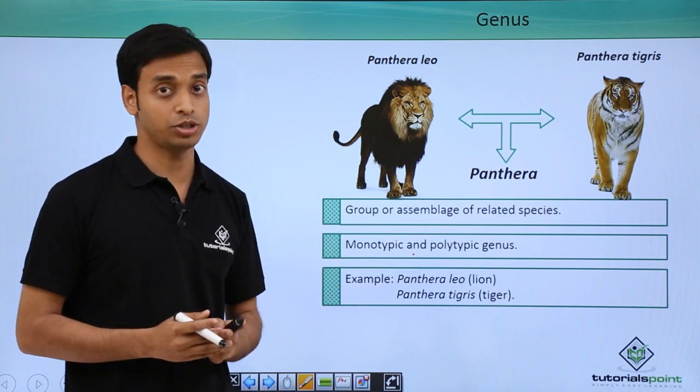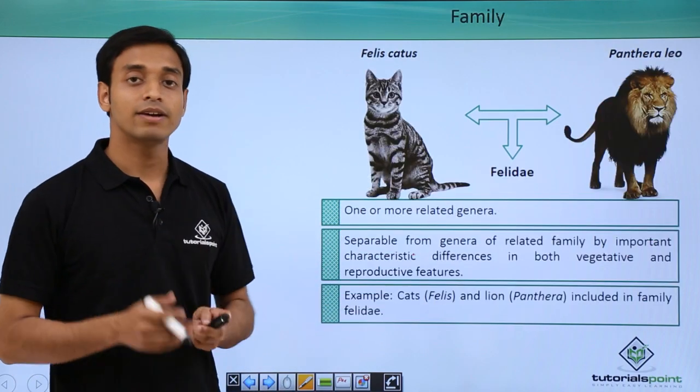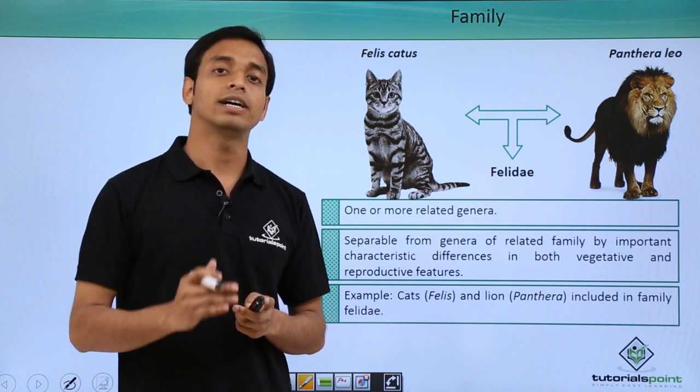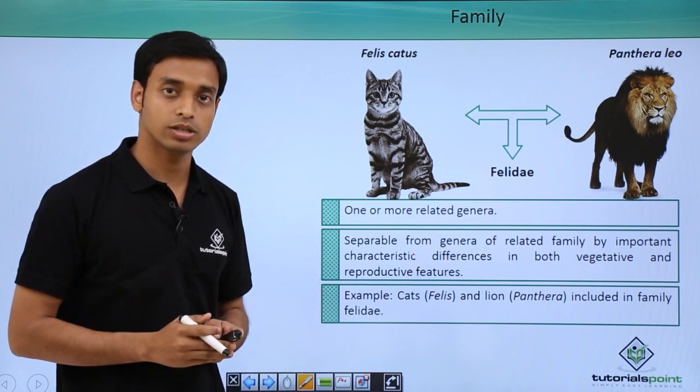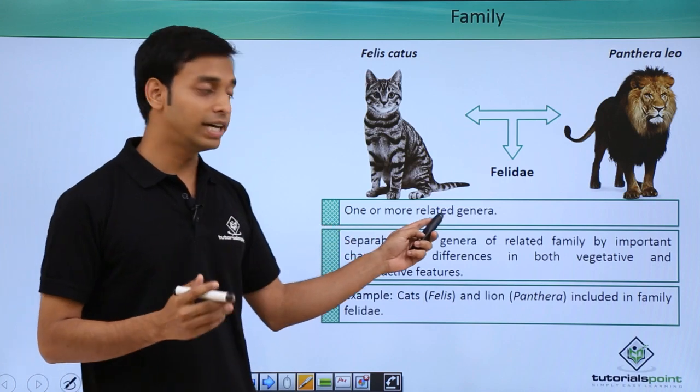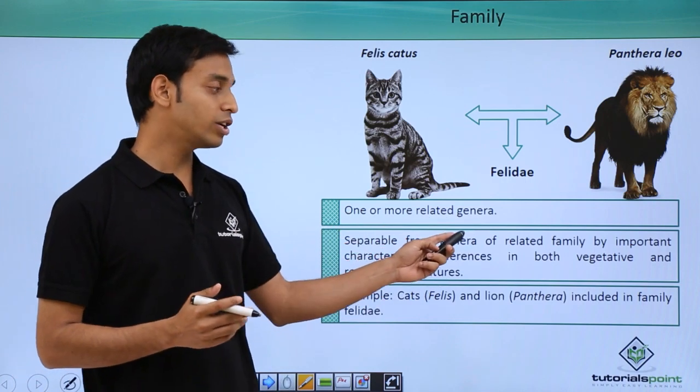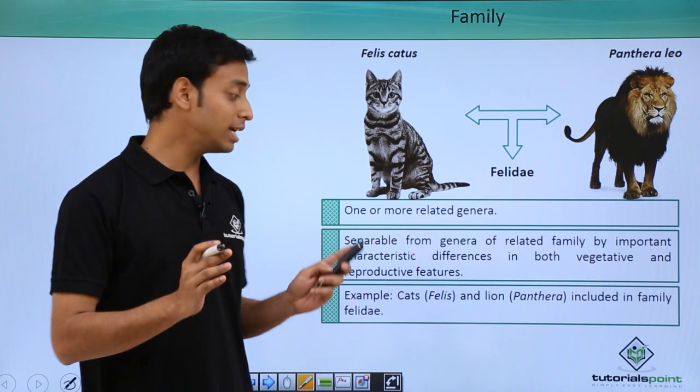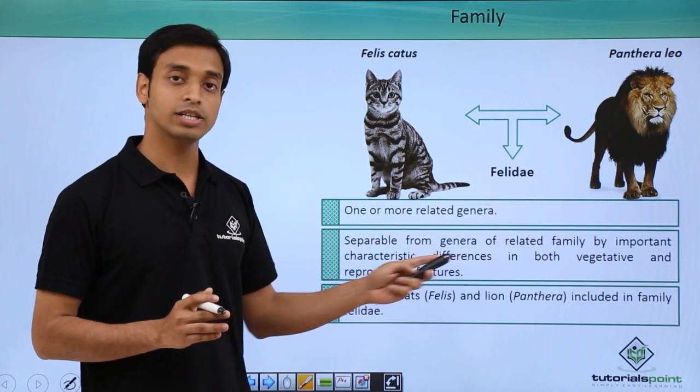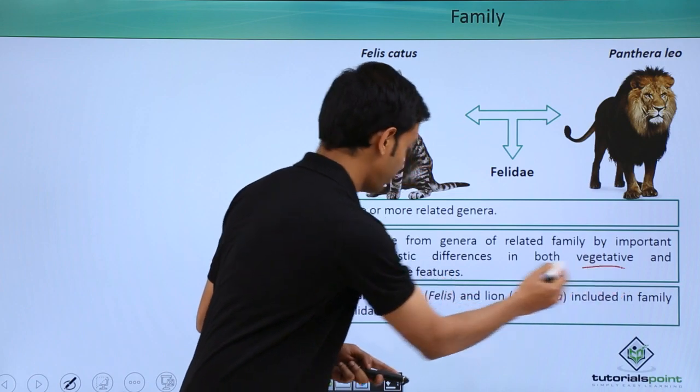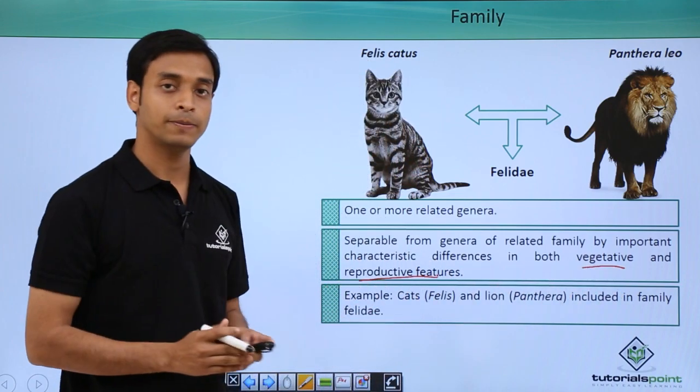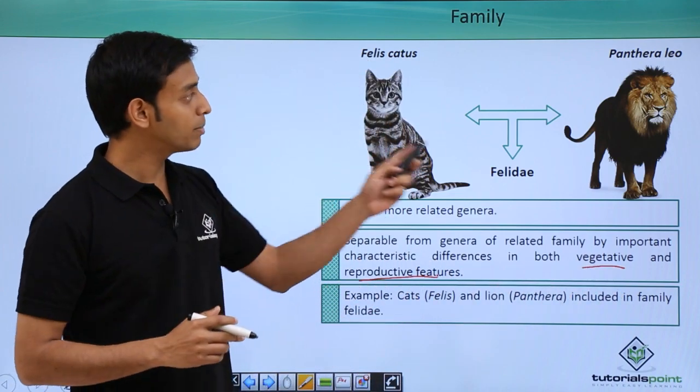The next is family. It is a higher taxonomic category than genus. Family is one or more related genera. These are separable from the genera of related families by important characteristic differences in both vegetative and reproductive features.